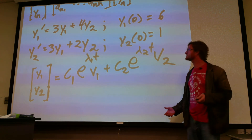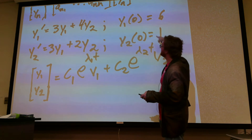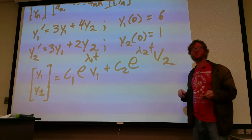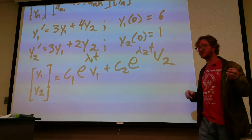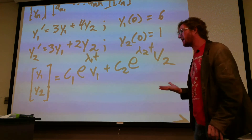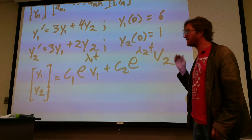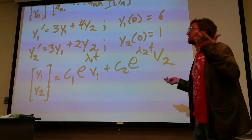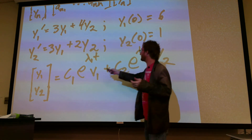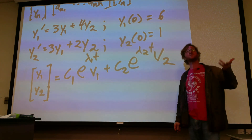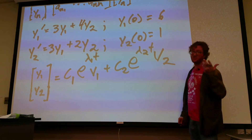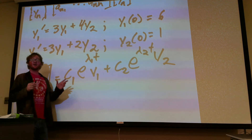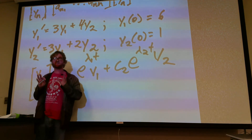Once you've solved for the eigenvectors, you're going to use these initial conditions and that is going to solve for your C1 and your C2. Then you're going to have a complete solution to the problem. The choice of eigenvectors will determine C1 and C2, and you will get a unique solution to the problem. Step one of this problem is just to find the eigenvalues.